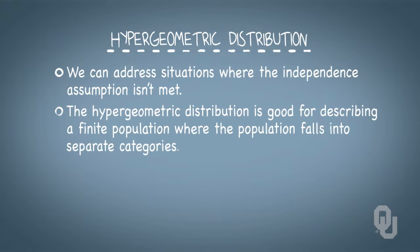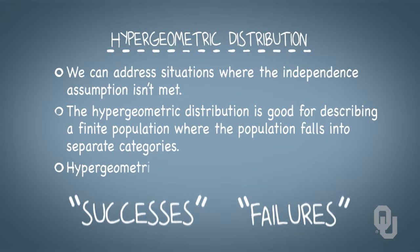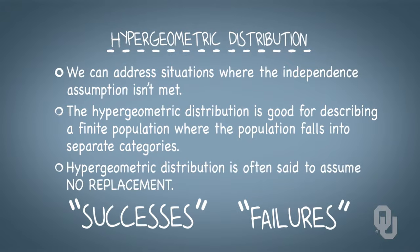The hypergeometric distribution is good for describing a finite and probably small population, where we know that the population falls into one category, call them successes, and the other half falls into the complement of that category, call them failures. As such, the hypergeometric distribution is often said to assume no replacement.